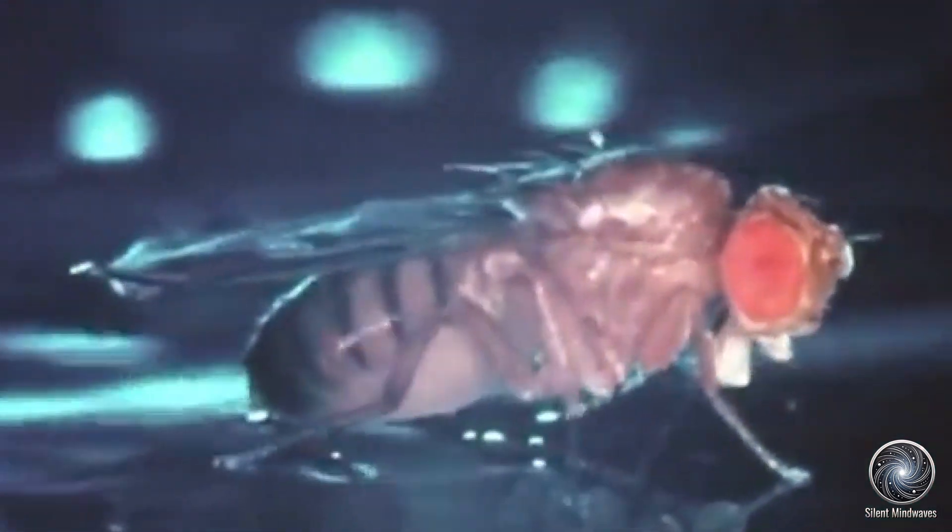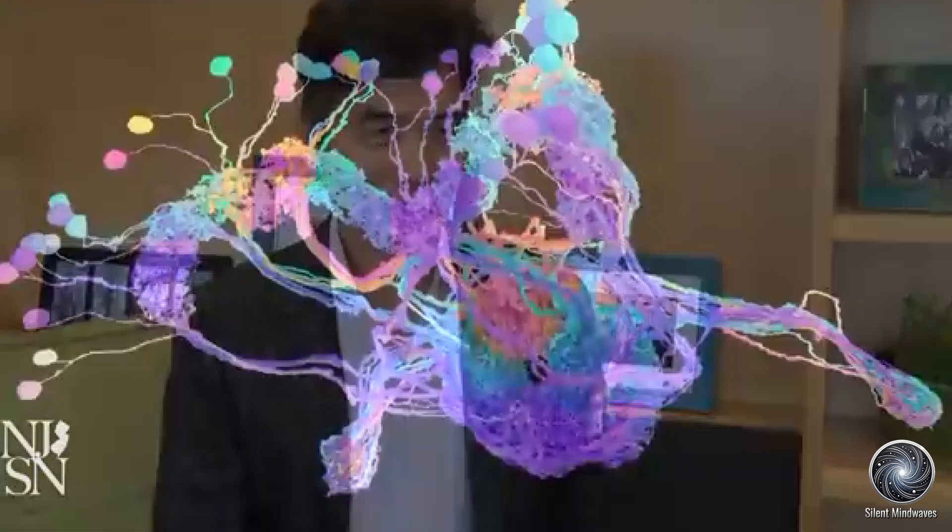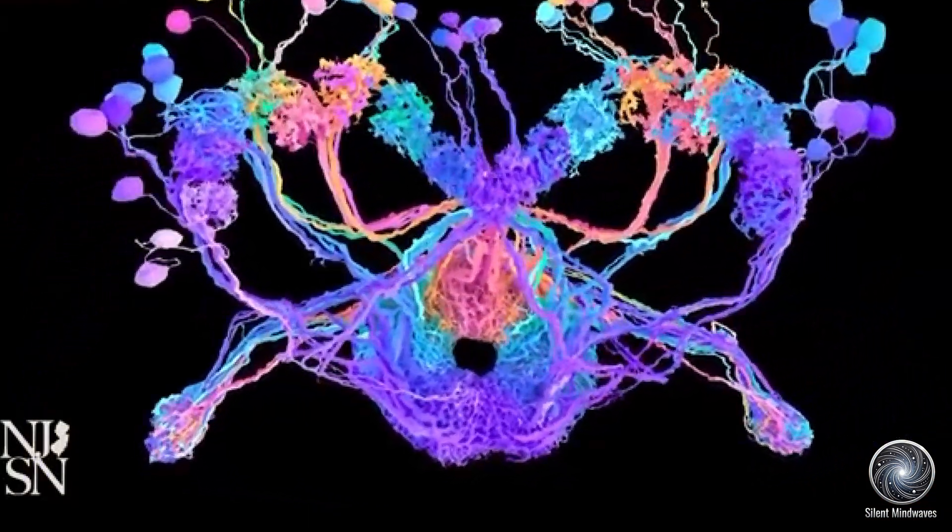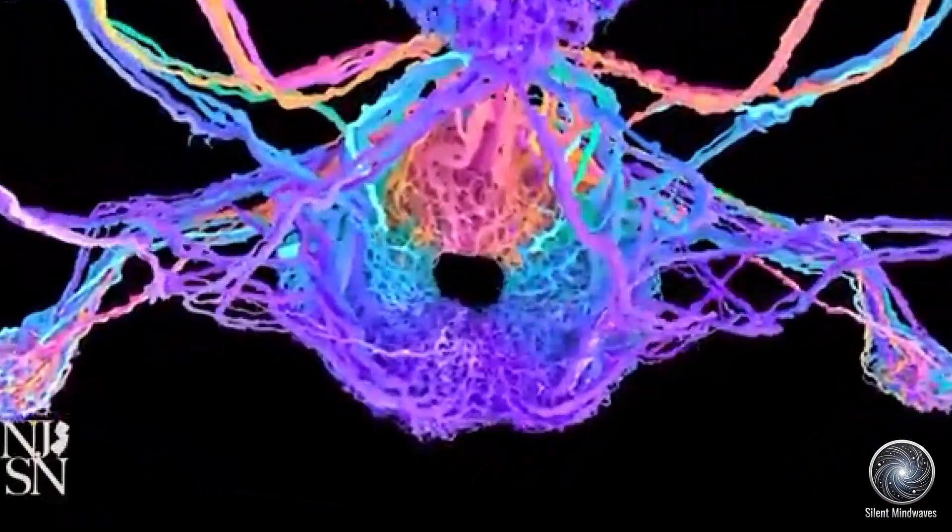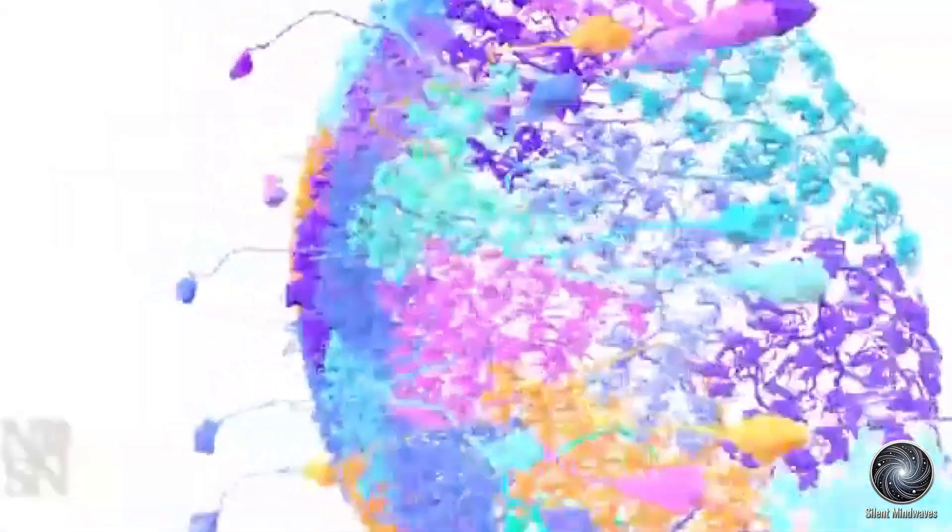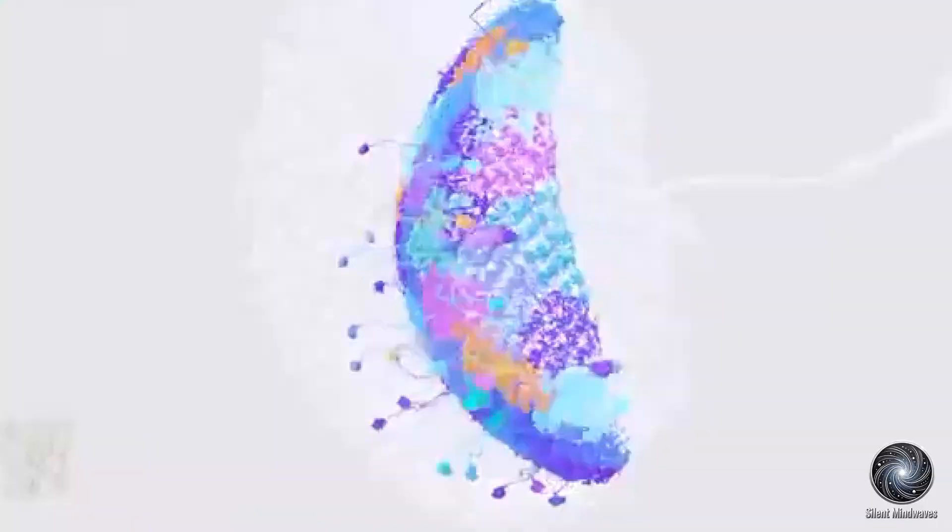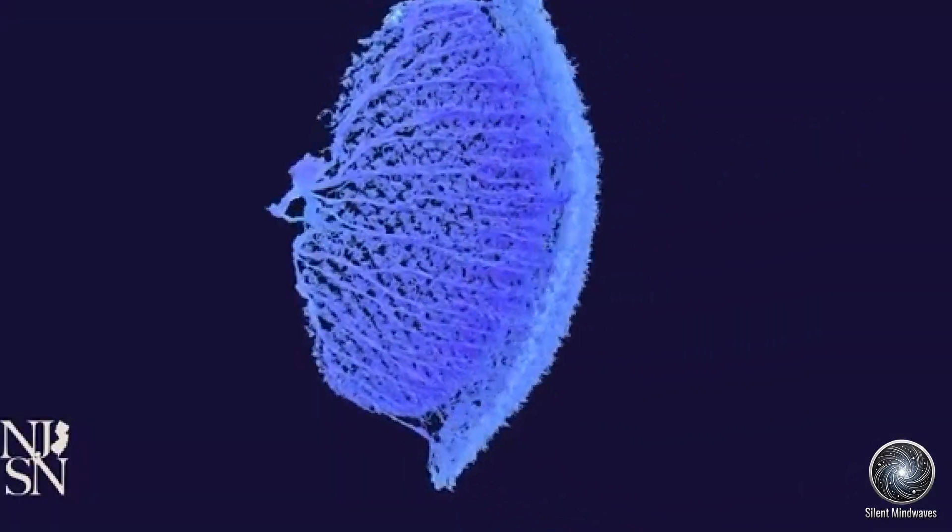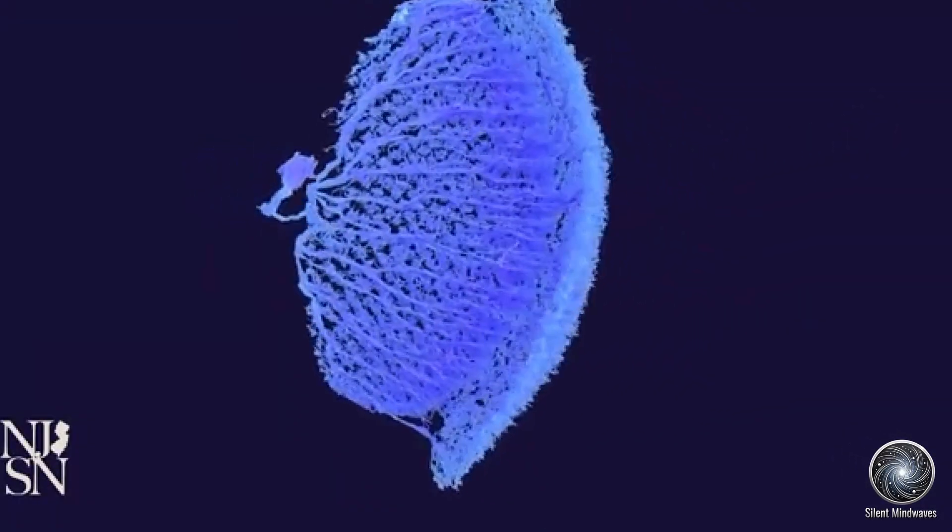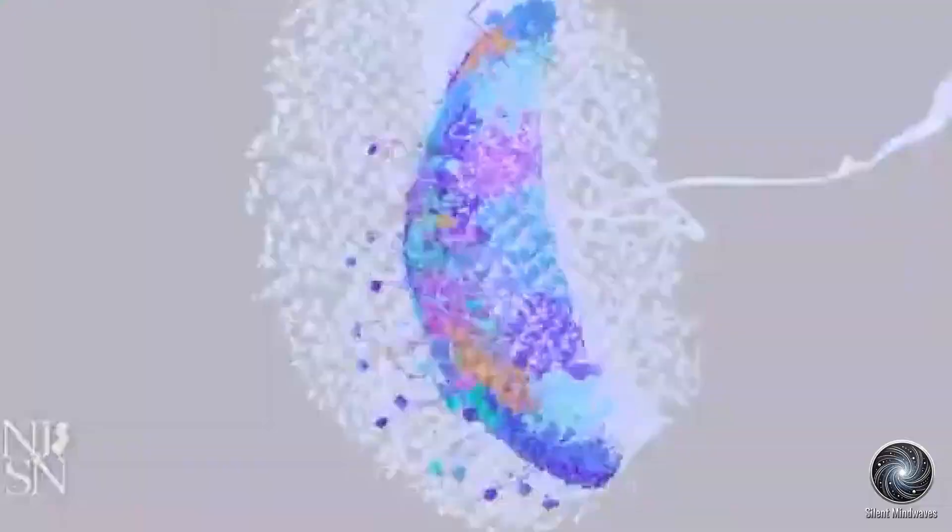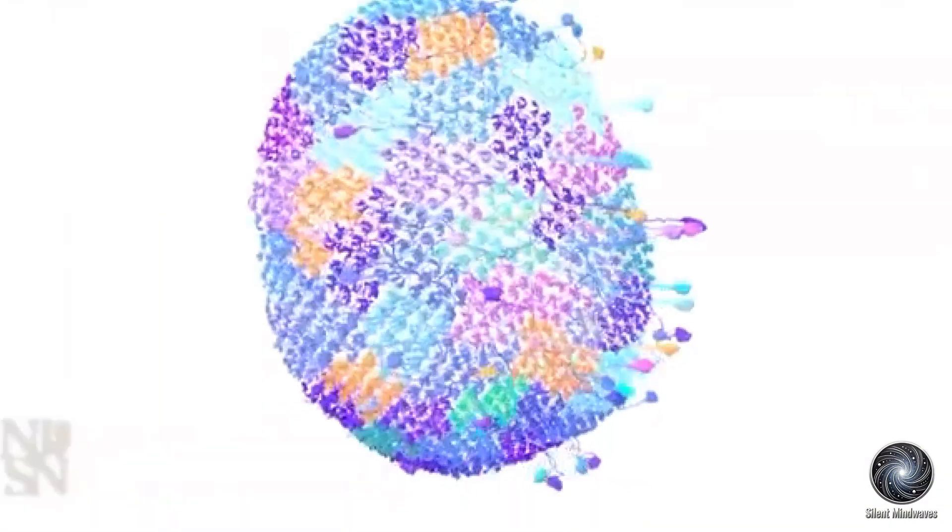By understanding the neural pathways of a simple organism, scientists can begin to unravel the more intricate connections of human brains. For medical research, this means potential breakthroughs in treating conditions like Alzheimer's, Parkinson's, depression, and other neurological disorders. It also lays the foundation for creating more accurate brain-machine interfaces, where digital devices can communicate directly with the human brain, potentially aiding those with paralysis or neurological impairments.